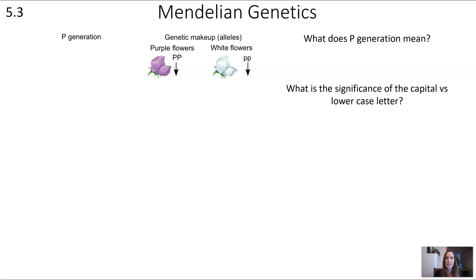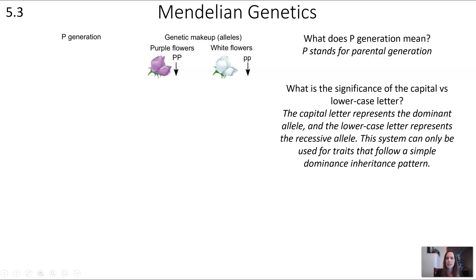Some terms related to Mendelian genetics: what does P generation mean, and what's the significance of a capital versus lowercase letter? P stands for parental generation — that's usually the first generation we're focusing on when predicting offspring. Capital represents the dominant allele and lowercase represents the recessive allele, though this is only true in simple dominance inheritance patterns.